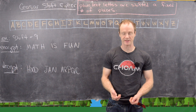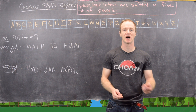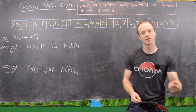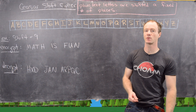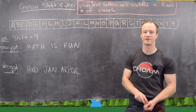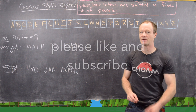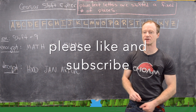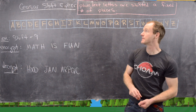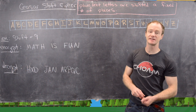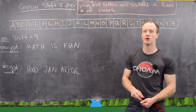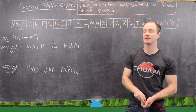In this video we're going to look at some simple cryptography exercises. The first cipher we're going to look at is known as a Caesar shift cipher, named after Julius Caesar who famously used one back in the day. This is also known as an additive cipher.